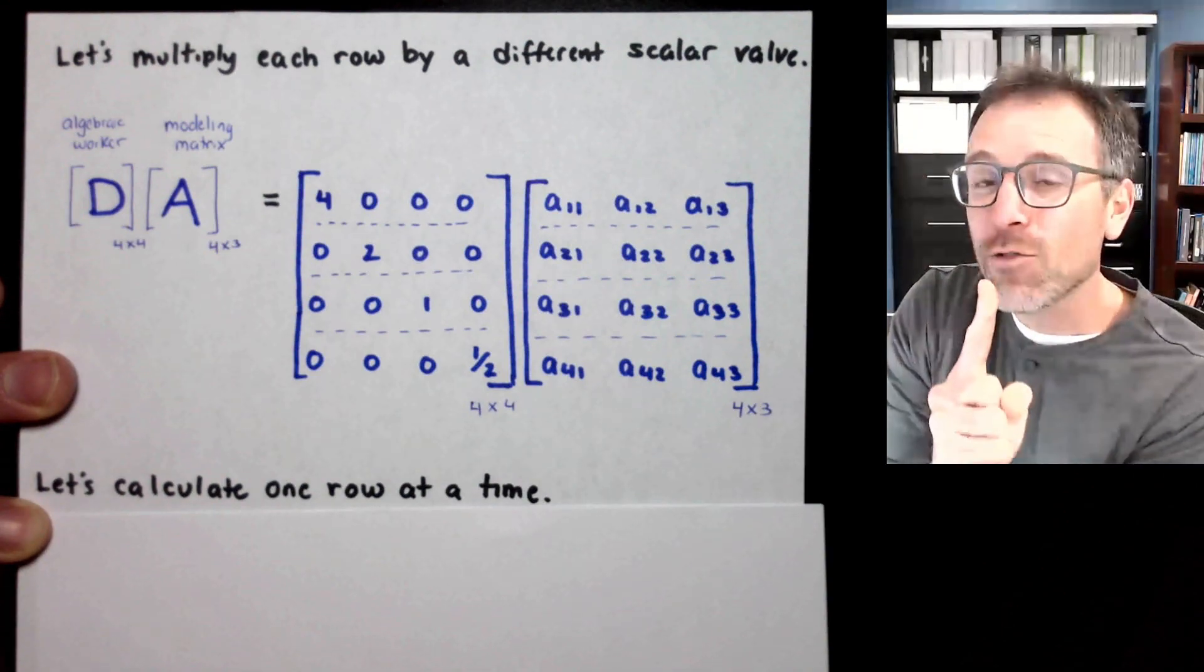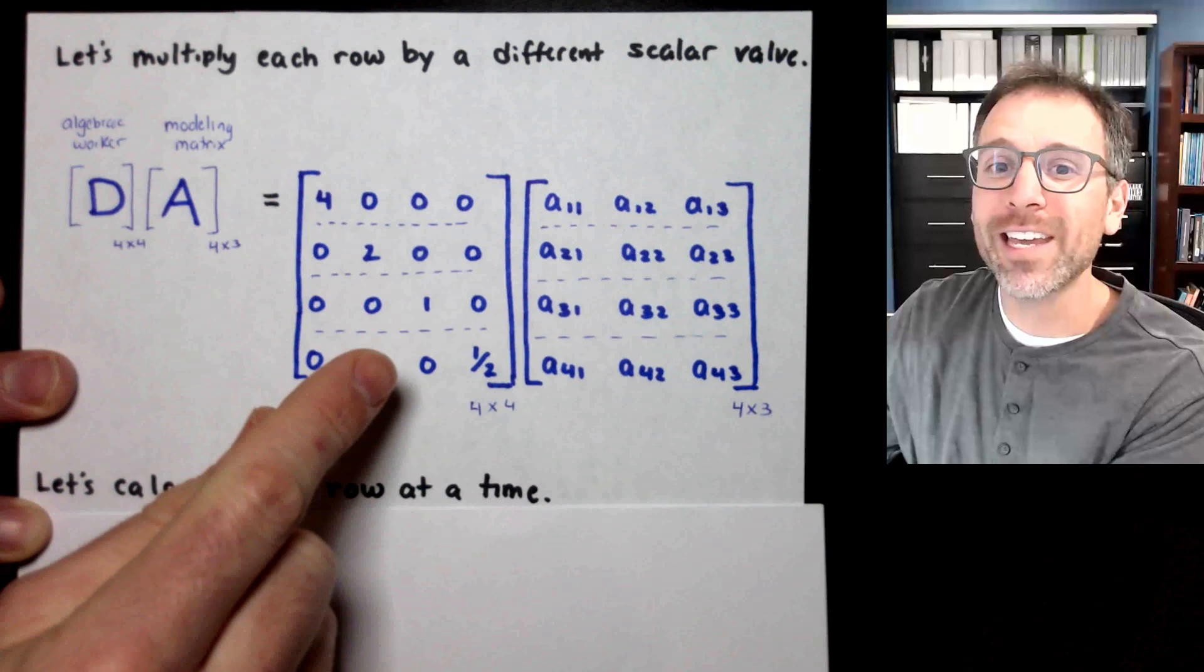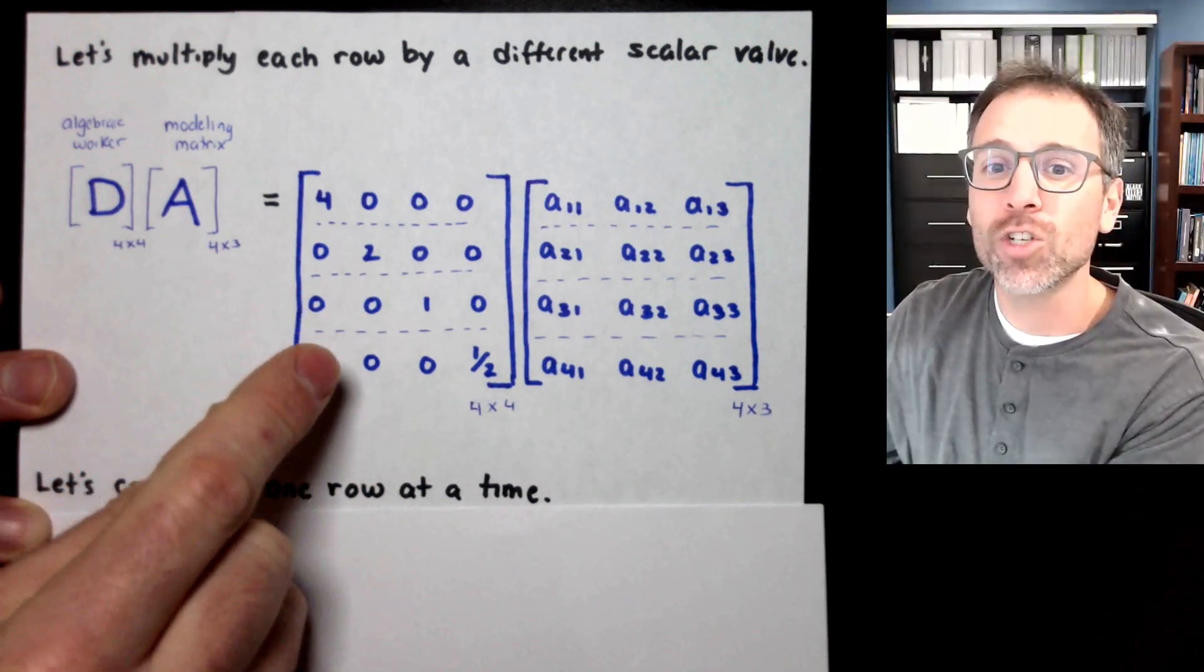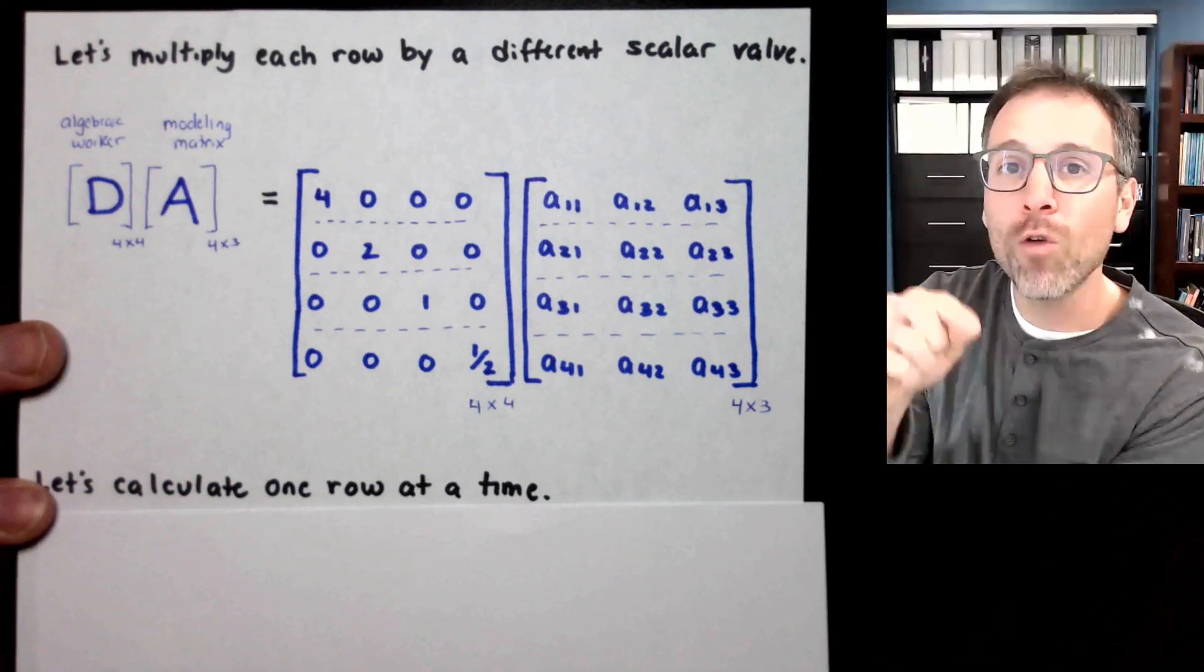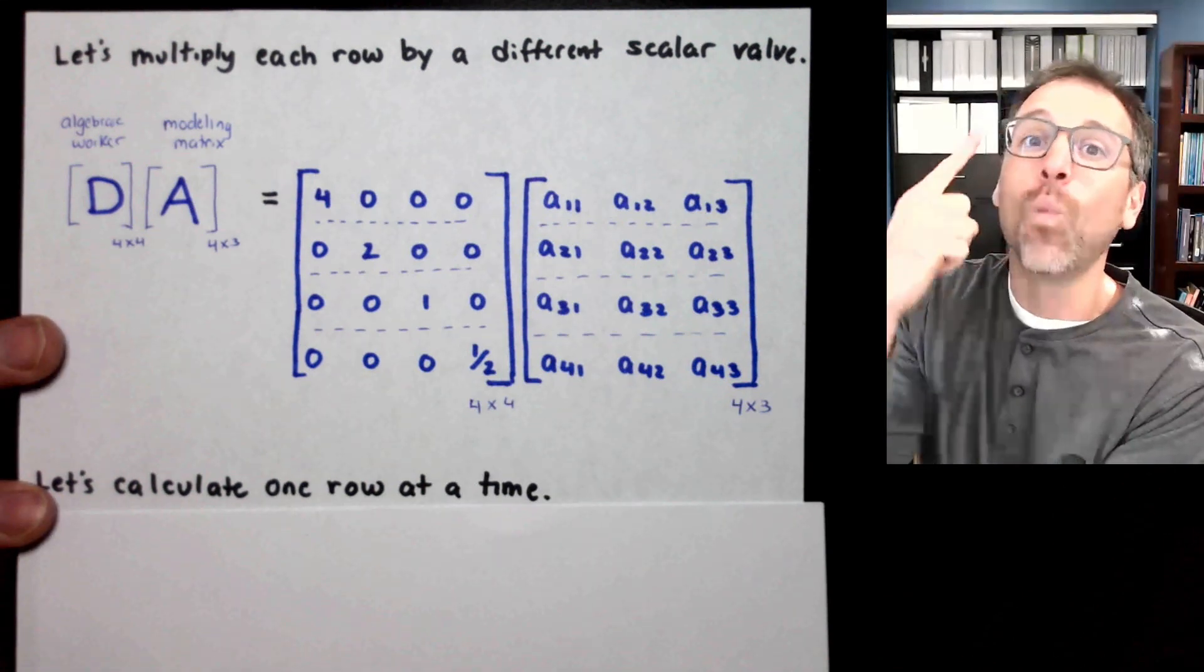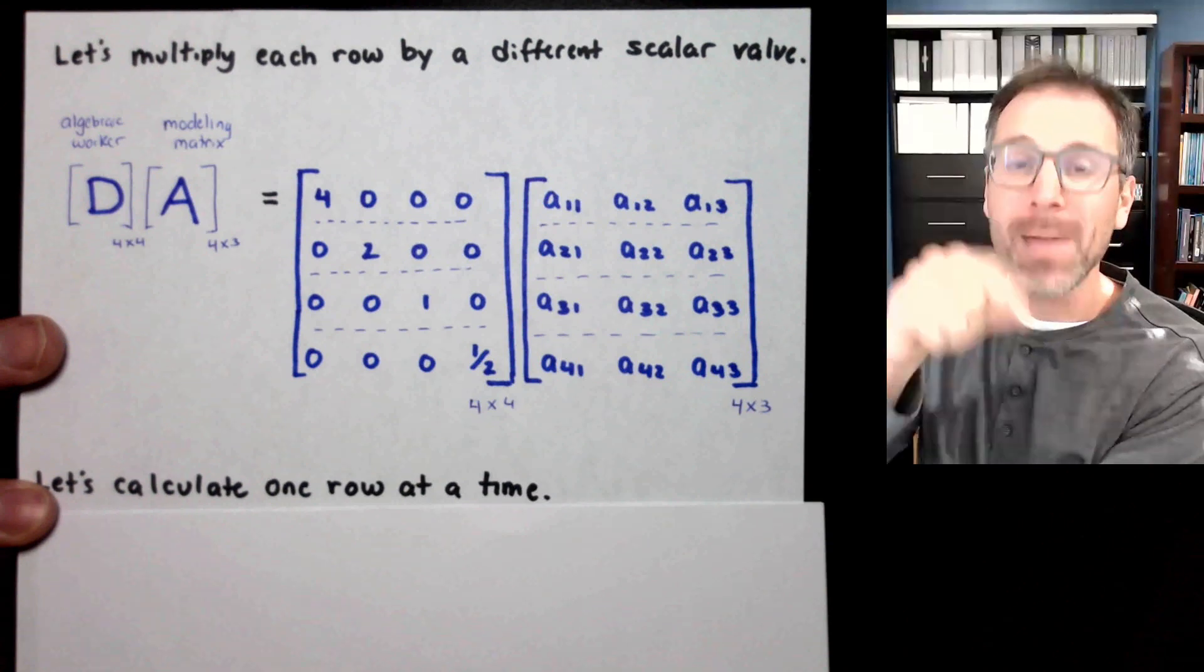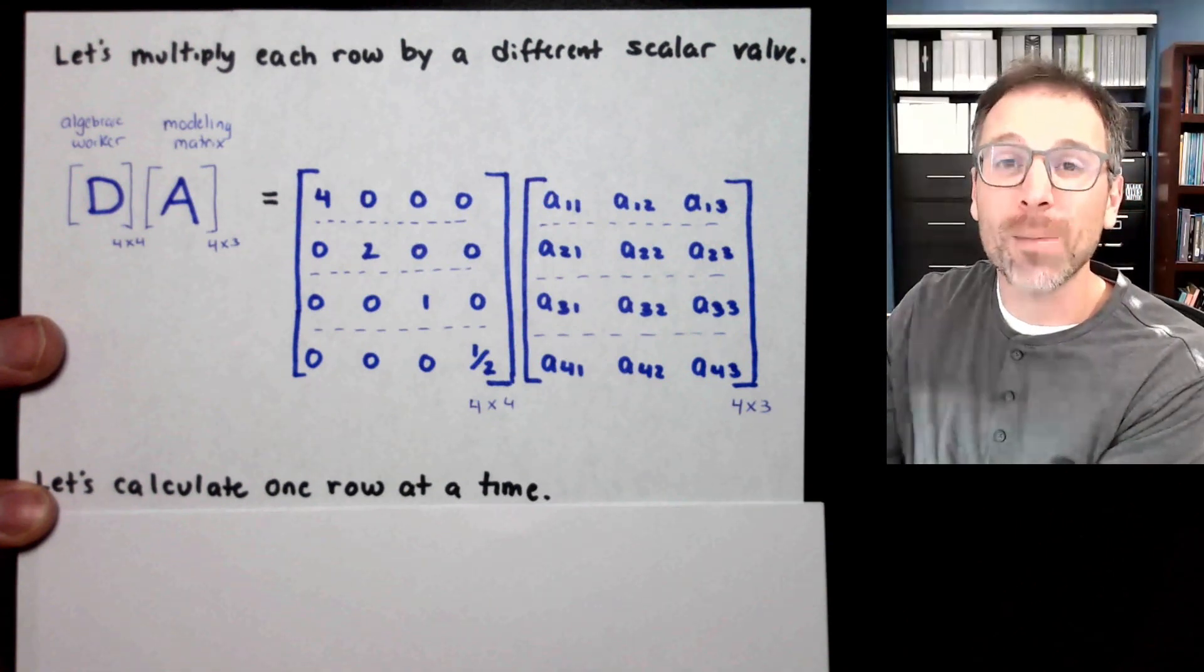Now, this is not blind repetition. I'm not just doing this without thinking. Every single time, I'm articulating it to myself. So by the time I finish this example, I'll have done four versions of row vector matrix multiplication and one full version of matrix matrix multiplication via linear combination of the rows.